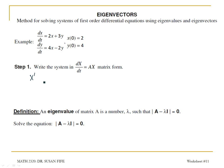I have x prime equals A, my coefficient matrix: 2, 3 for the first row and 4, negative 2 for the second row. We don't have any terms that are not x or y. We'll worry about the initial values later, but we could write them in matrix form as 2 and 4.